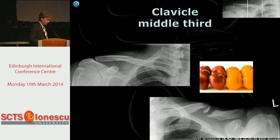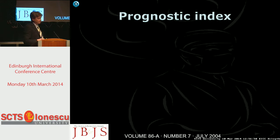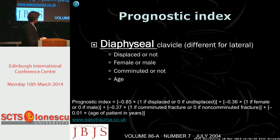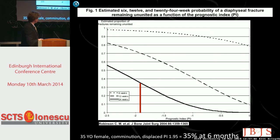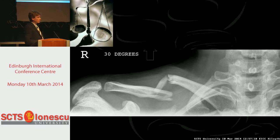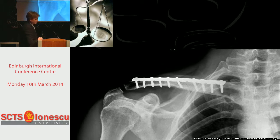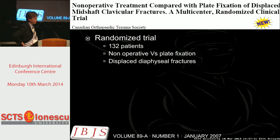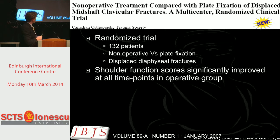Robinson developed a clever prognostic index which predicts how slow a fracture is to heal. Basically, if you're a 35-year-old female, you'll have a prognostic index of 1.95, meaning at six months there's a 35% chance your collarbone won't be healed. It comes down to weighing pros and cons - so perhaps for 36-year-old females we should be fixing them. The Canadian Orthopaedic Trauma Society conducted a randomised study of 132 patients, non-operative versus plate fixation of diaphyseal fractures, showing shoulder function scores were better at all time points.